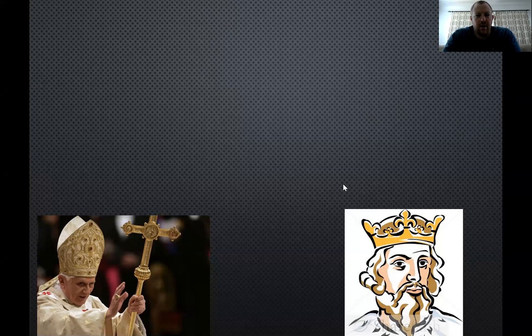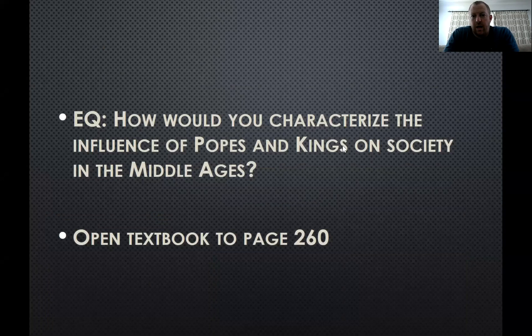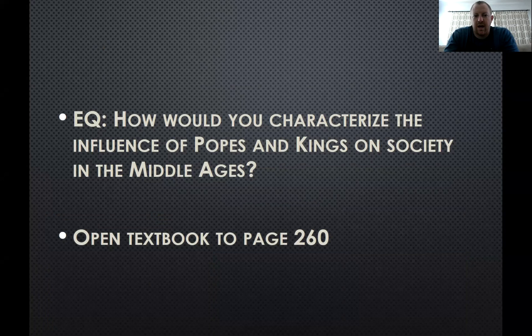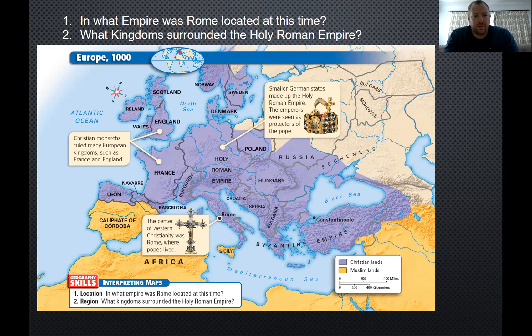Chapter 10, Section 1 — we're going to talk about Popes and Kings. The Pope is the leader of the Catholic Church, and a lot of the kings got power because the Pope allowed them to. Your essential question would have been: how would you characterize the influence of Popes and Kings on society in the Middle Ages? Here's the map of Europe. At this point the Holy Roman Empire becomes a thing, and you can see at the bottom right-hand corner that everything in purple is Christian lands, everything in yellow is Muslim lands — and that's going to become important starting in the next section.